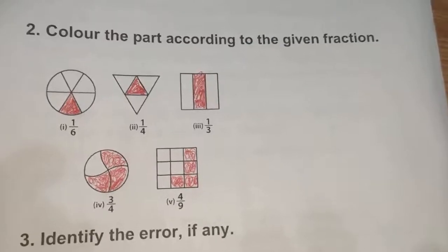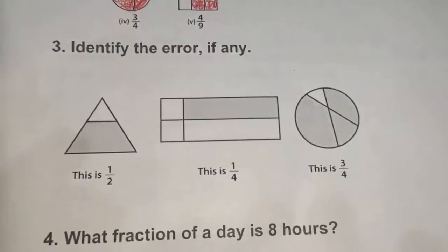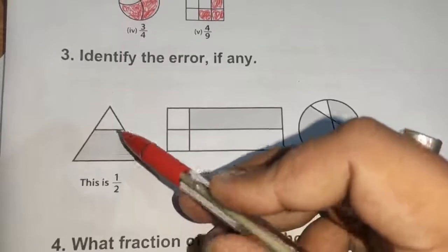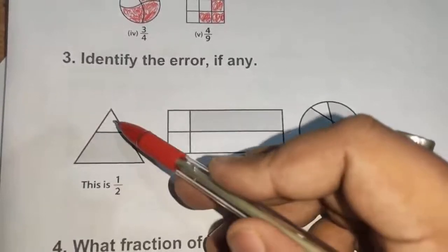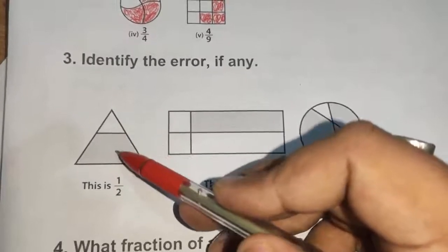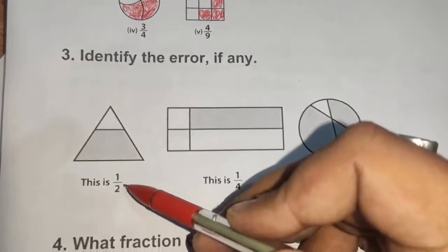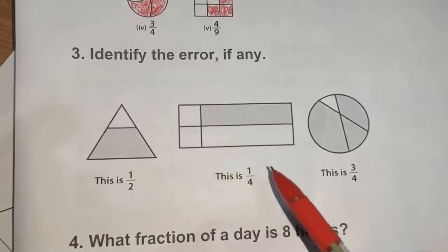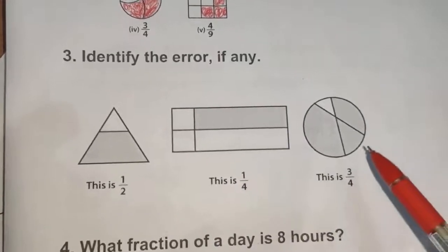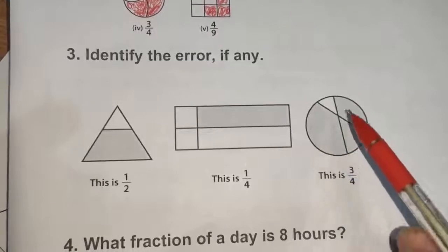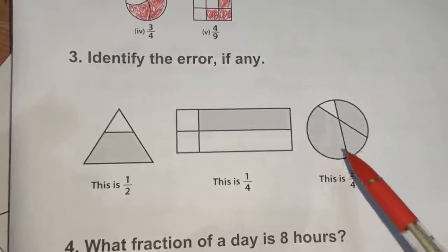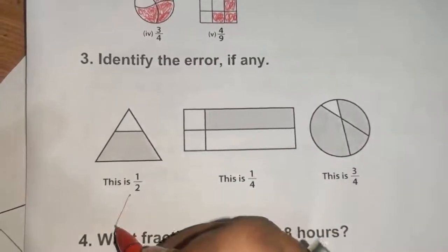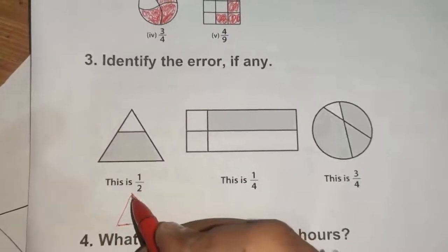Now in question number 3, we identify the error if any. The first figure shows 1/2, but one part is greater than the other — the 2 parts are not equally divided, so it is not a correct 1/2. For 1/4, all 4 parts are not equal — that is the error. For 3/4, the 4 parts are also not equal, so it is not a correct 3/4.